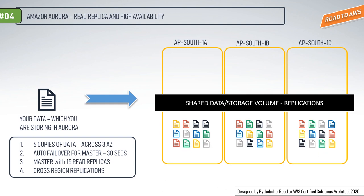Coming back to the Amazon Aurora primary instance, you get a master endpoint for writing data to the database. Remember, it needs four copies out of six to write. And you get a read replica, which needs three copies out of six to read.